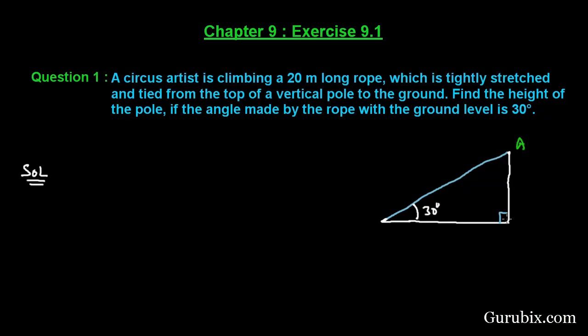Here we have A, this is B and this is C. We are given that the rope is 20 meters long and we have to find out the height of the pole. So let the height of the pole be H meters.